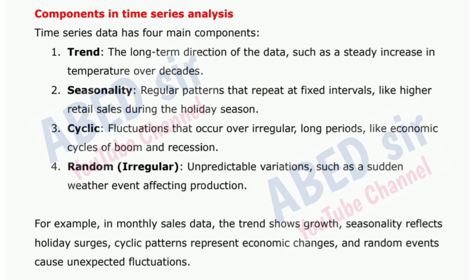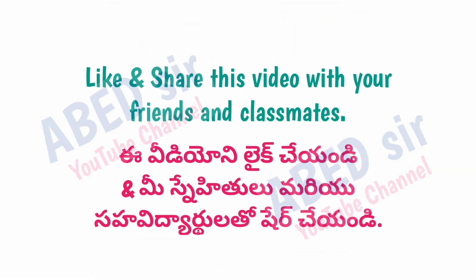Next important short question: Components in time series analysis. Time series data has four main components. 1. Trend: the long-term direction of the data, such as a steady increase in temperature over decades. 2. Seasonality: regular patterns that repeat at fixed intervals, like higher retail sales during the holiday season. 3. Cyclic: fluctuations that occur over irregular, long periods, like economic cycles of boom and recession. 4. Random: irregular, unpredictable variations, such as a sudden weather event affecting production. For example, in monthly sales data, the trend shows growth, seasonality reflects holiday surges, cyclic patterns represent economic changes, and random events cause unexpected fluctuations.